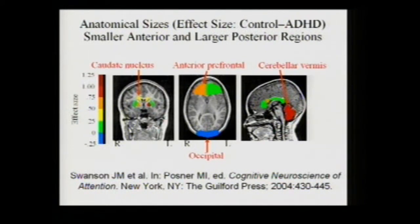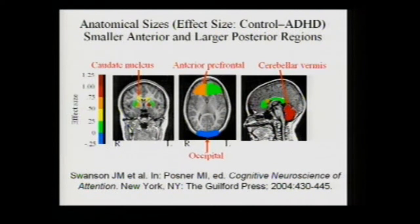These color images are superimposed on an anatomical MRI, with color related to the size of the difference between ADHD and control individuals in brain anatomy. Several areas in the frontal region are smaller on average: the caudate nucleus, the anterior prefrontal cortex, and the cerebellar vermis. The caudate nucleus is approximately 0.25 to 0.5 standard deviations smaller; the right prefrontal cortex about 0.5 to 0.75 standard deviations smaller; and the cerebellar vermis nearly one standard deviation smaller across multiple studies.